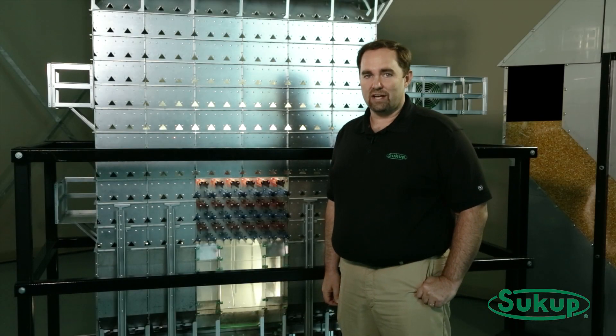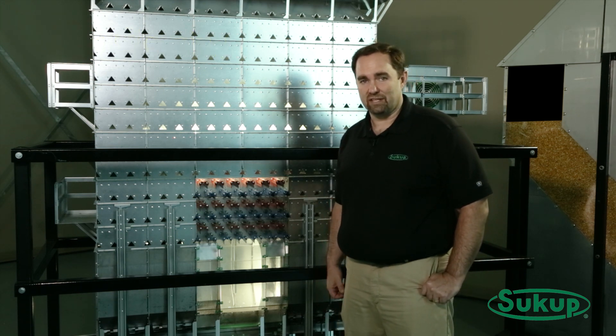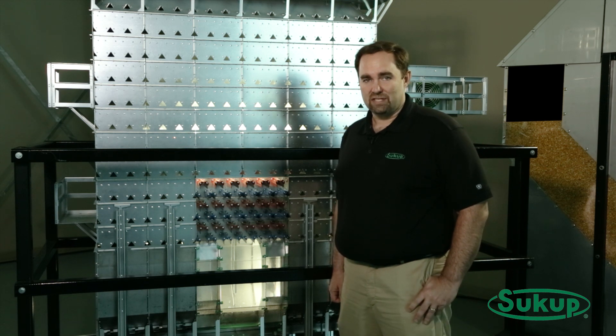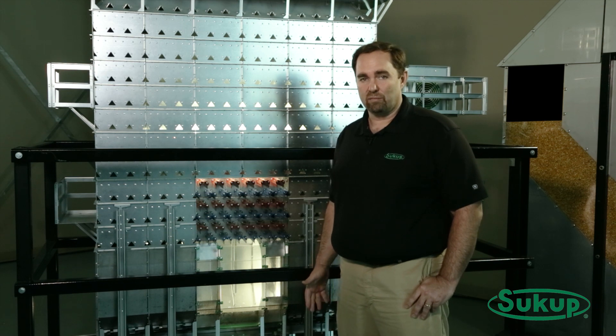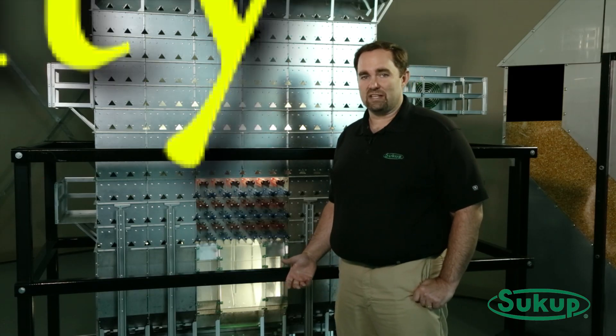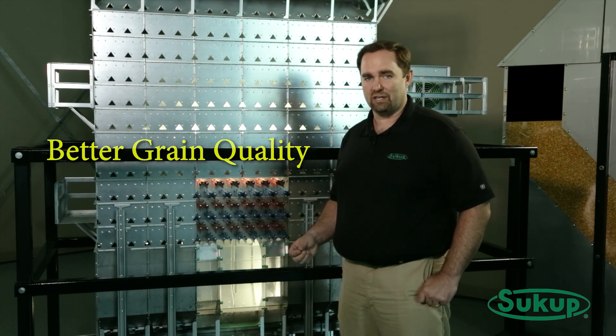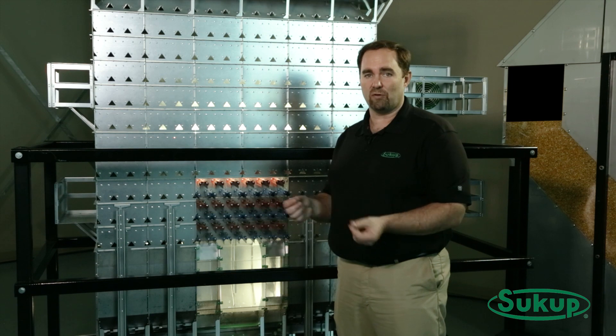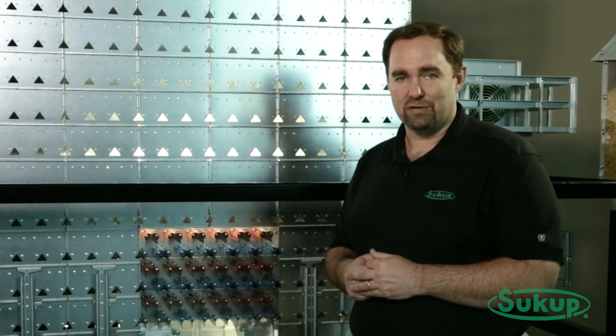We feel the Sukup mixed flow dryer has a few distinct advantages. First, you don't have to clean the dryer like you would a screen dryer in season to keep it running efficiently. Secondly, the fuel efficiency is better than a screen dryer because of the vacuum cooling, as well as the lower airflow per bushel used in the mixed flow style of drying. Lastly, the grain quality is better as well because every kernel sees the same temperature regardless of if it's done near the inside of the column or the outside of the column. Please consider the Sukup mixed flow dryer for your next dryer purchase. Thanks.